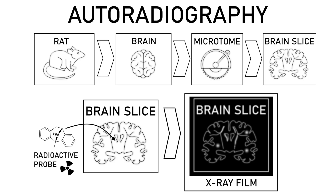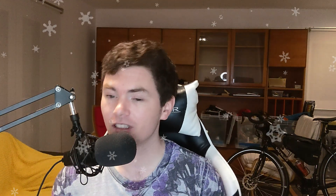Autoradiography is a method which can be used to image biological samples. In this case, the researchers used it to look at the distribution of certain proteins or nucleotide sequences in very thin slices of brain tissue. Because it's very much a biological procedure, these images should all be effectively as unique as fingerprints or snowflakes. However, I did find a couple of pixel-perfect matches within papers.